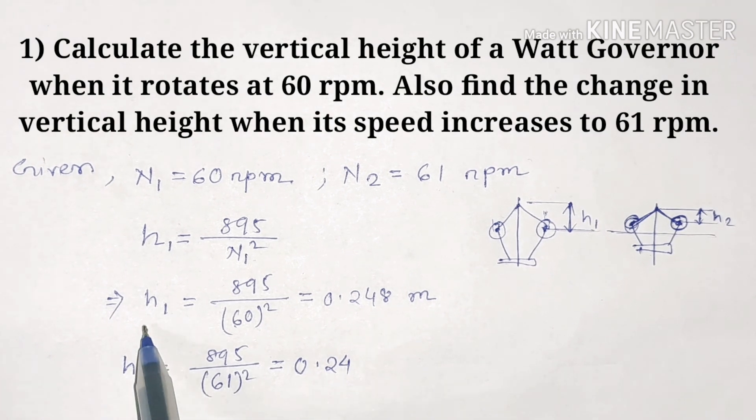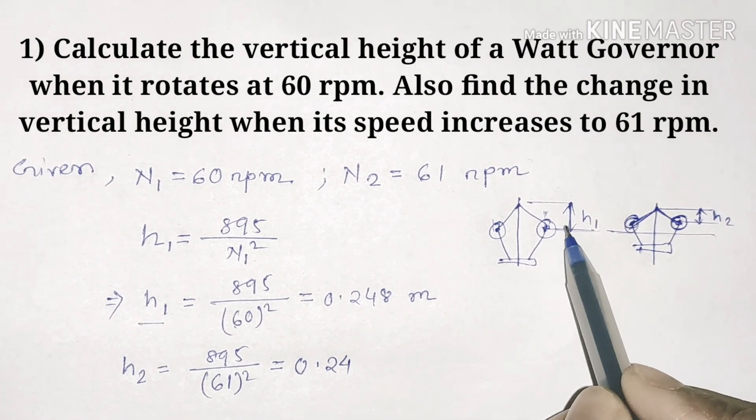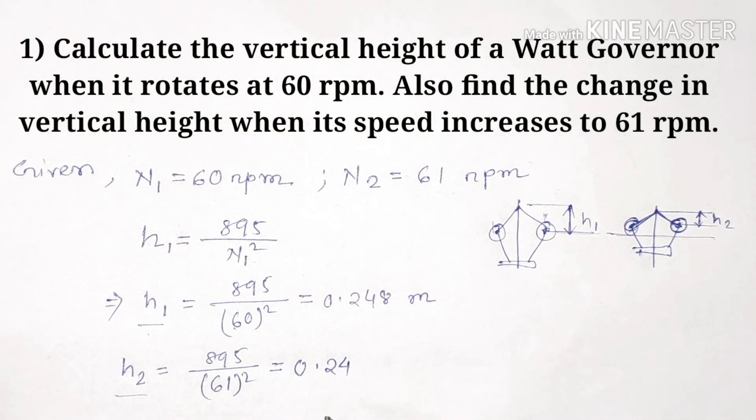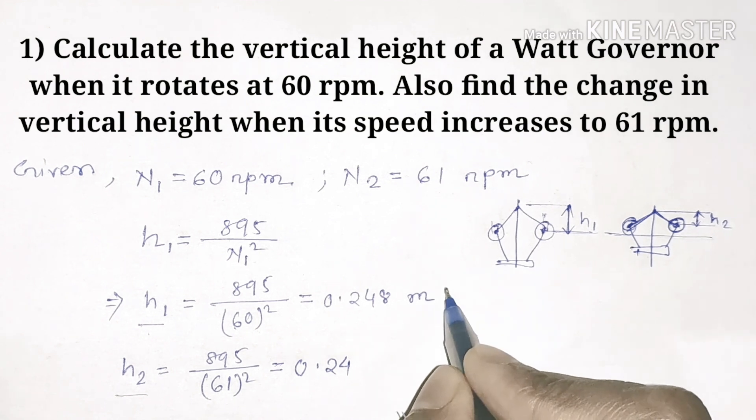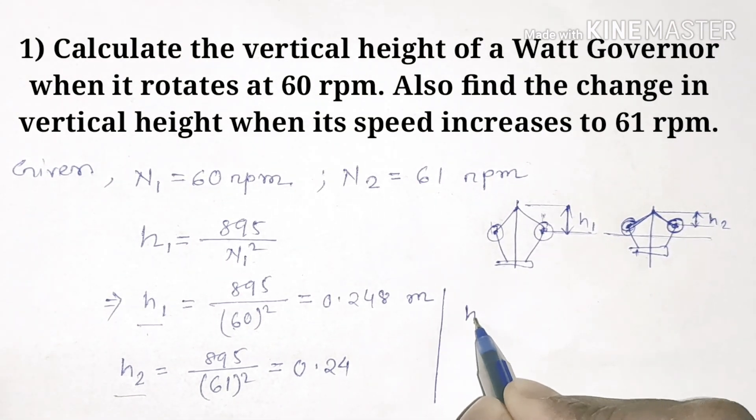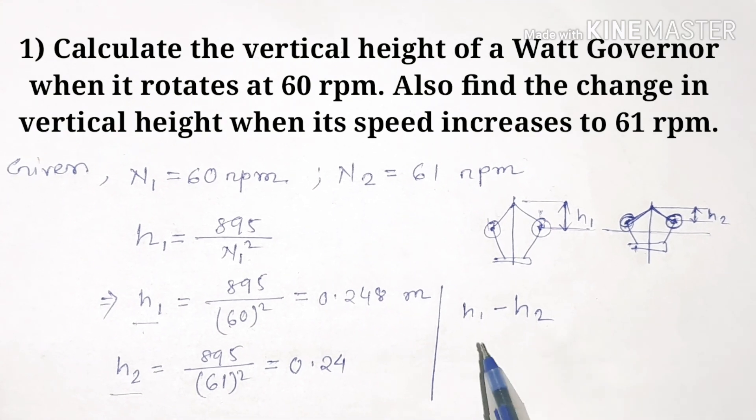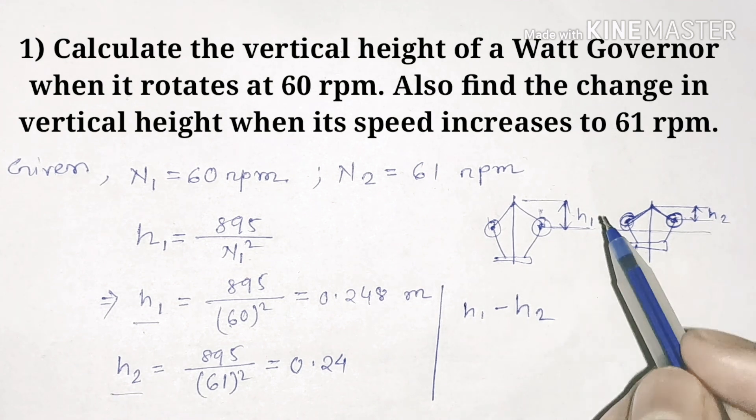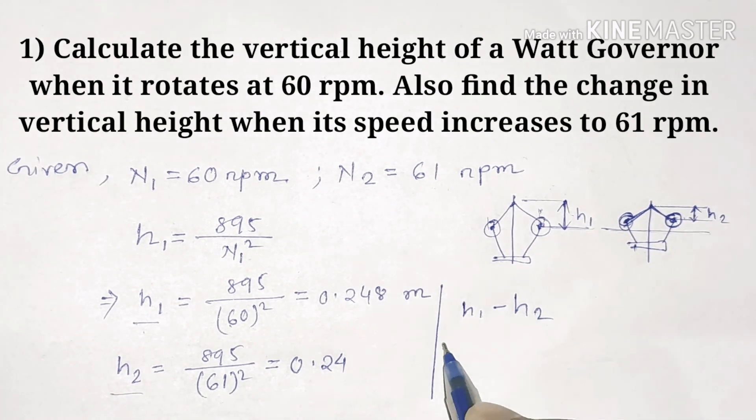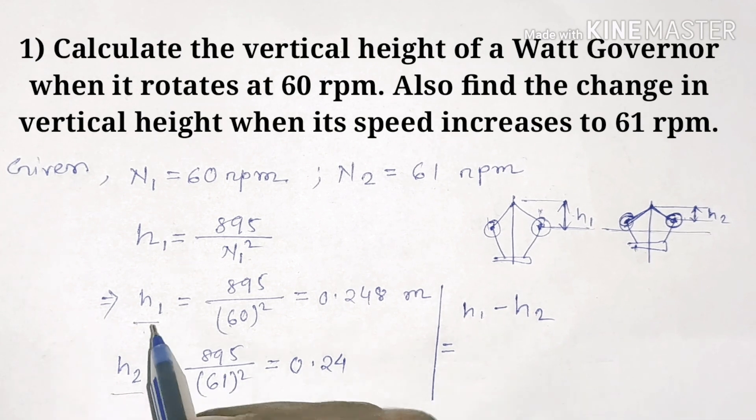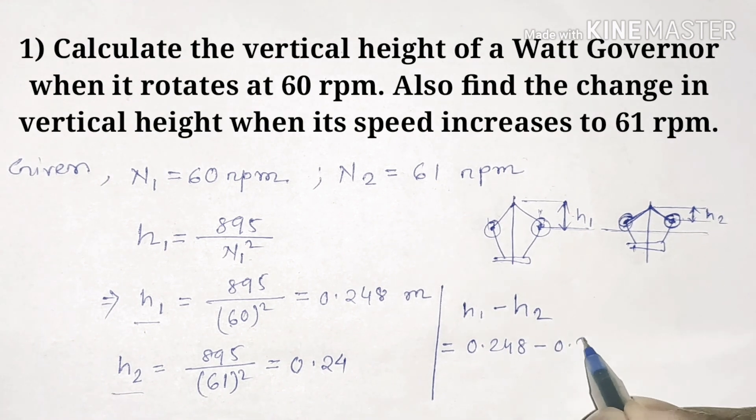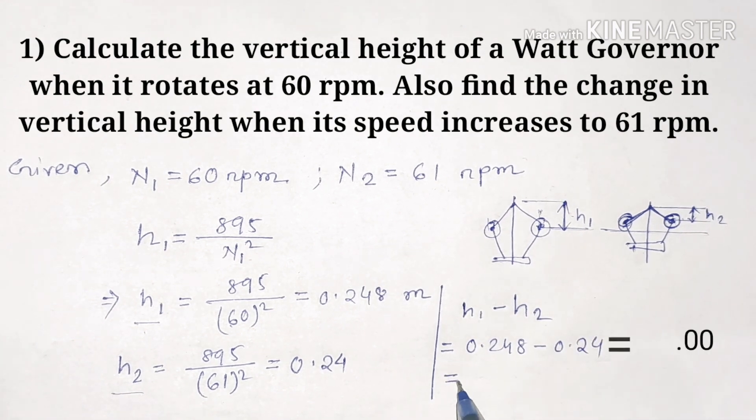Now we know h1 and h2. We have to find the change in vertical height. We have to find h1 minus h2. h1 is 0.248 minus h2 which is 0.24. So the answer will be 8 millimeters.